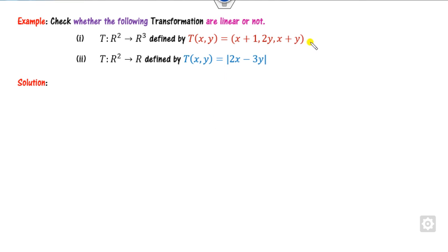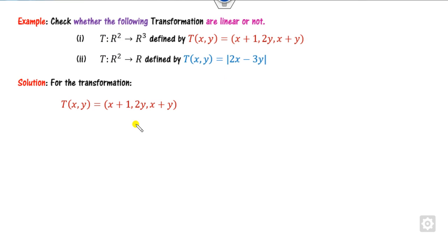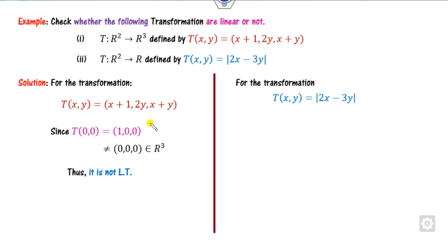For example, if you have to check whether a mapping is a linear transformation or not, consider this mapping from R² to R². Take the two elements x1, y1 and x2, y2 both belonging to R². You can clearly see that the first property — T of (0, 0) — does not give 0, which means this is not a linear transformation. You simply need to provide one counter example if it is not a linear transformation.